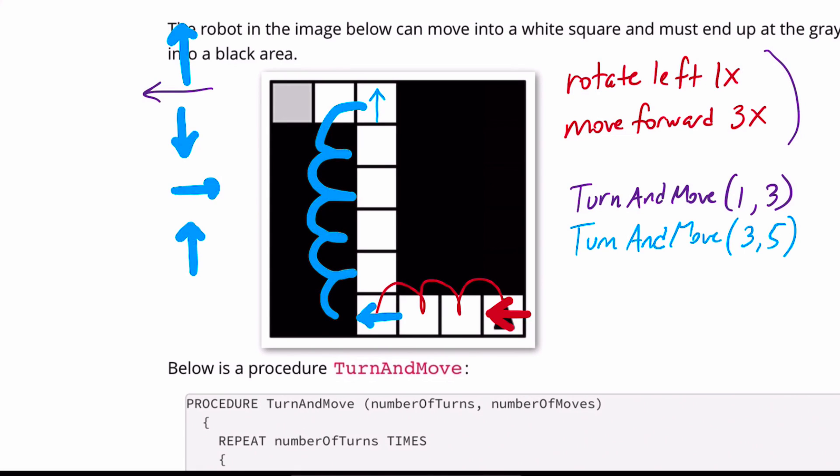Finally, to get the robot in the gray box, we have to turn left one time and then move forward two times, one, two. And then the robot will be facing forward and this is our solution.